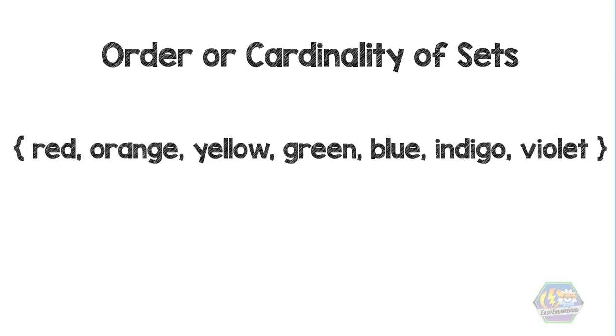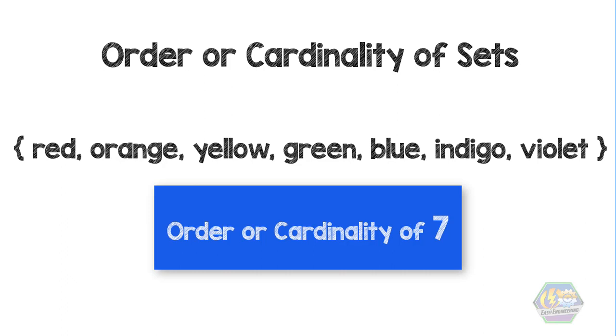The set red, orange, yellow, green, blue, indigo, and violet has an order or cardinality of 7.